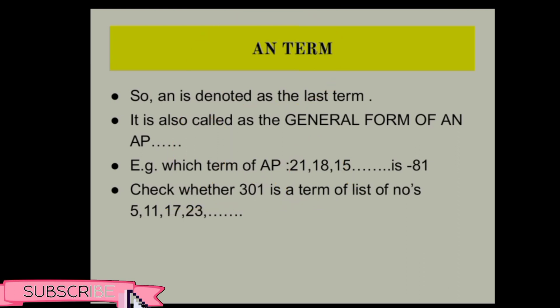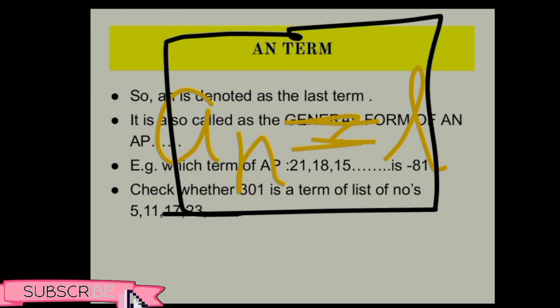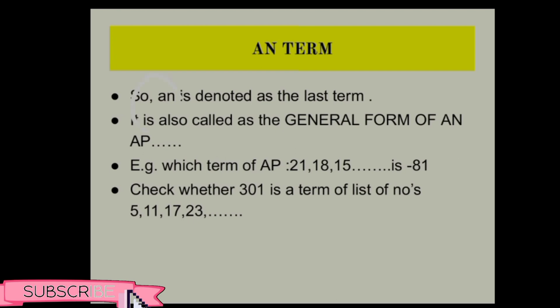So a_n is denoted as the last term. It is the general form of an AP. Example: which term of AP 21, 18, 15, ... is -81? Check whether 301 is a term of the list 5, 11, 17, 23, ... a_n is the last term, the last number of any AP.